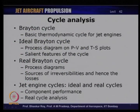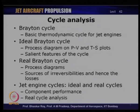Subsequent to that, we started the thermodynamic analysis of jet engines and discussed the basic thermodynamic cycle — the Brayton cycle. We represented the ideal Brayton cycle on PV and TS process diagrams. The ideal Brayton cycle consists of isentropic compression, constant pressure heat addition, isentropic expansion, and constant pressure heat rejection. We also examined the real Brayton cycle, including sources of irreversibility in the compression and expansion processes, as well as pressure losses in the heat addition process.